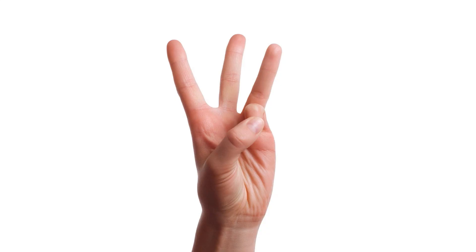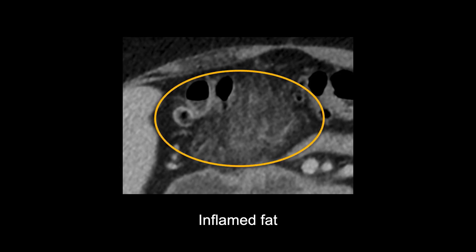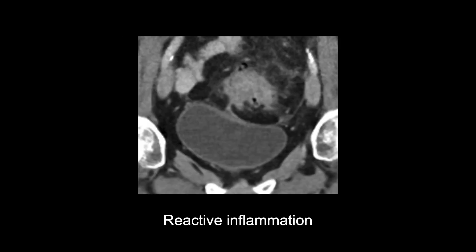There are three key imaging findings that will help you diagnose diverticulitis. First, the diverticula will appear thickened and enlarged. Second, the surrounding fat will appear hazy or strandy, indicating inflammation. And third, there will be inflammation of nearby structures in reaction to the diverticulitis.